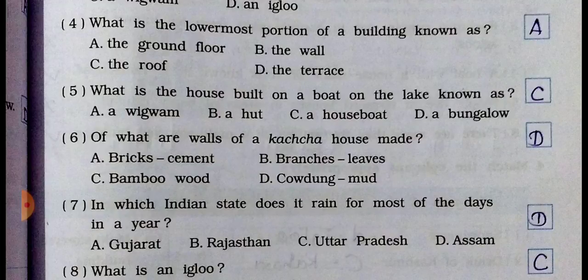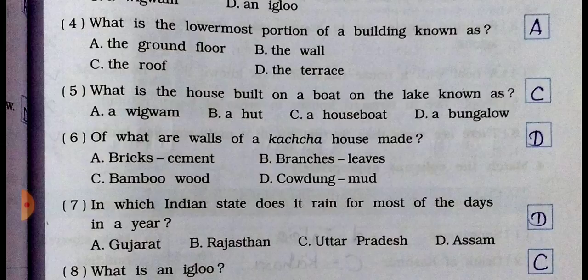See question number four: what is the lowermost portion of a building known as? Option A: the ground floor. Option B: the wall. Option C: the roof. Option D: the terrace. The answer is A — the ground floor. Write A for question four.